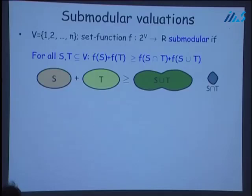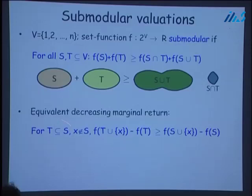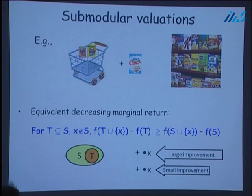It's well known that a function is submodular if and only if it satisfies an intuitive notion of diminishing marginal returns, which says that for any two subsets T and S of the ground set, for any item X not in S, the marginal value of X given T is at least the marginal value of X given S. For instance, for the supermarket example, the value to you of a new box of cereal is smaller if you already have cereal in your cart.